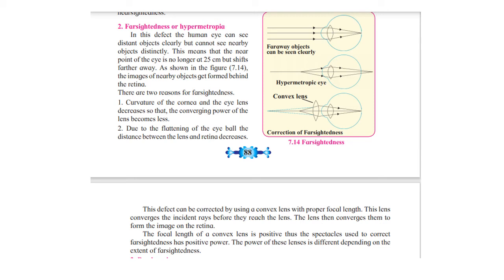The power of the corrective lens depends on the severity of the person's defect. Spectacles for farsightedness are called reading spectacles or reading glasses. To summarize: a positive power means you are using a convex lens, and a negative power means you are using a concave lens.